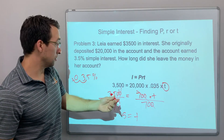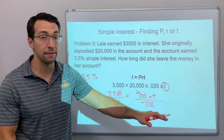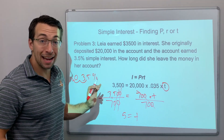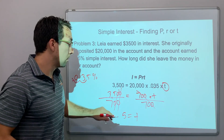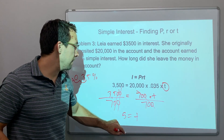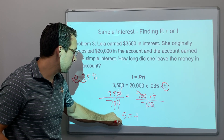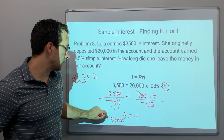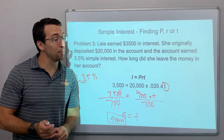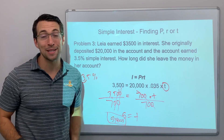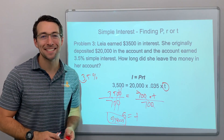So 5 years. She deposited $20,000, left it there for 5 years, and then the bank gave her $3,500 to keep her money there. That's pretty cool. T equals 5 years. All right, good luck. Hope you're quickly going to be escaping and you'll have your liberty. Have a good one, see you next time.